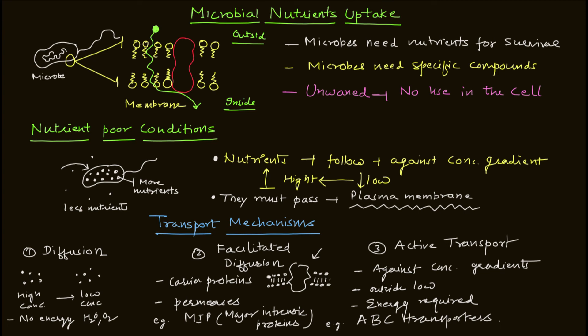This was a basic description of microbial nutrient uptake. We discussed diffusion, facilitated diffusion, and active transport. The microbial cell wall and plasma membrane act as barriers that nutrients need to pass, and there are defined mechanisms in place for that. Depending on the concentration and the type of nutrient, a particular mechanism will be followed. I hope this video was helpful for understanding microbial nutrient uptake. See you in the next video — take care.